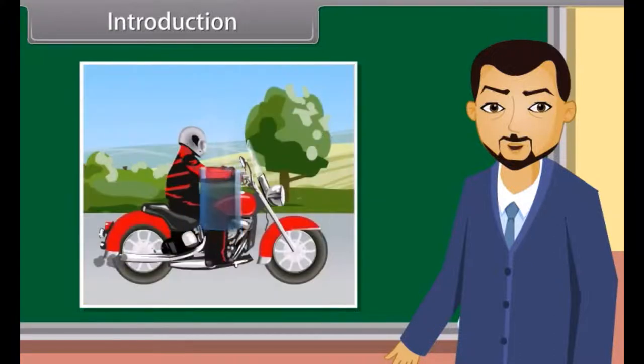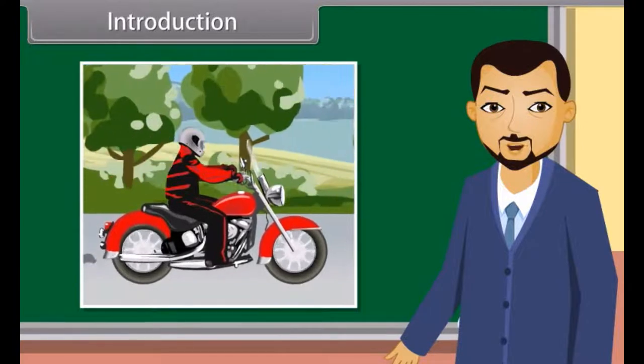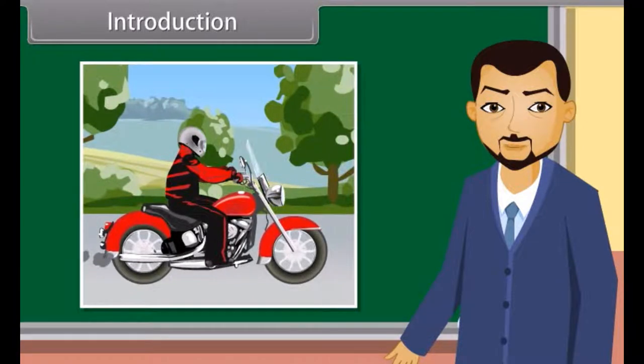However, if we use the same petrol in our bike, the petrol is converted into an energy source that is usable. Children, in this lesson, we will learn about the conventional sources of energy and the non-conventional sources of energy and its impact on the environment.